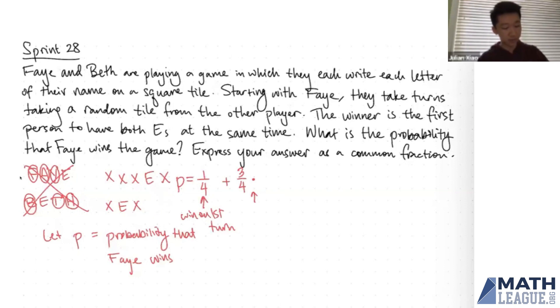And in this case, now it's Beth's turn. We still want to ensure that Faye can win, so we want to make sure that Beth does not choose the E from Faye's hand. So three-fourths is the probability that Faye chooses the X, and now we want to find the probability that Beth chooses an X. And there are four X's out of five possible tiles, so we're going to multiply that by four-fifths.